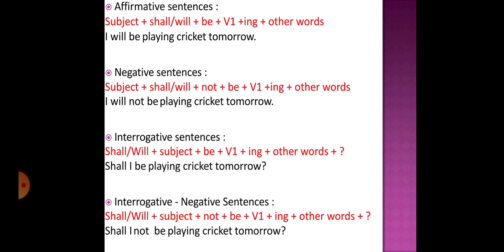For the interrogative sentence in future continuous tense, the structure is: shall/will plus subject plus be, plus verb plus '-ing,' plus other words, plus question mark. For example: 'Shall I be playing cricket tomorrow?' For the interrogative negative, we add 'not': shall/will plus subject plus not plus be, plus verb plus '-ing,' plus other words, plus question mark. For example: 'Shall I not be playing cricket tomorrow?' — you simply add 'not' to the interrogative form.